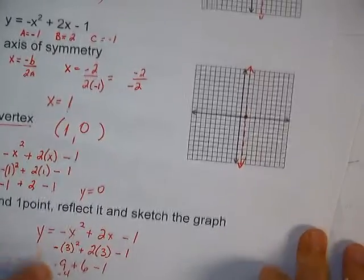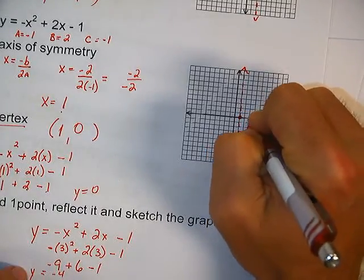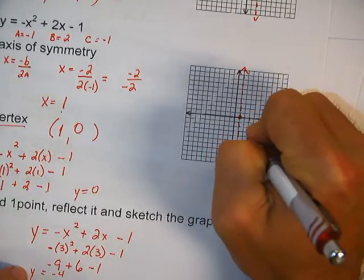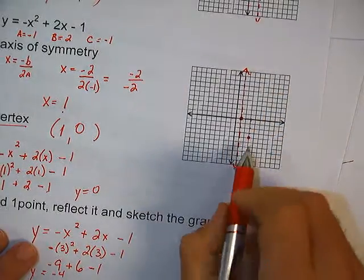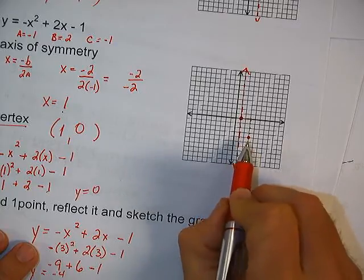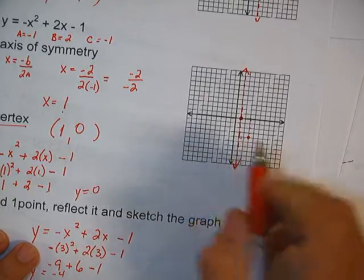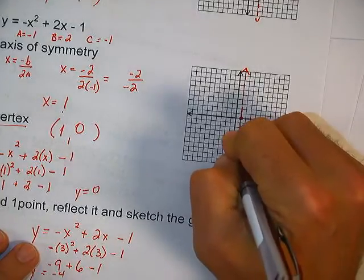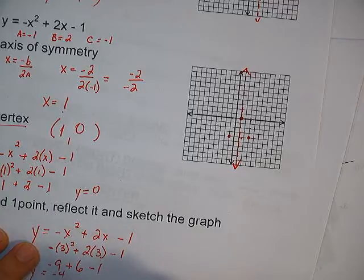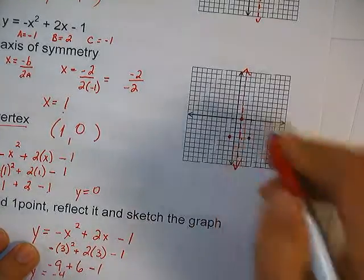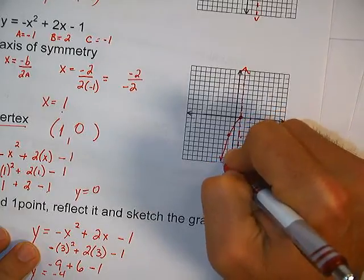Let's put this point on the graph: 3, negative 4. It's a mirror image — how far is it from the axis of symmetry? 1, 2. So go 2 on the other side of the axis of symmetry. That point is at negative 1, negative 4. Now that we have our three points, I can sketch my parabola.